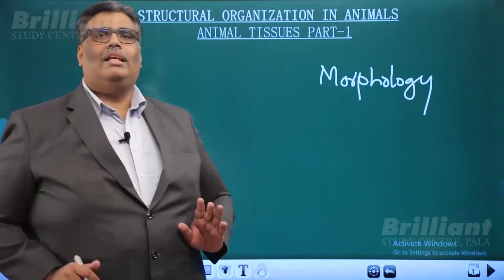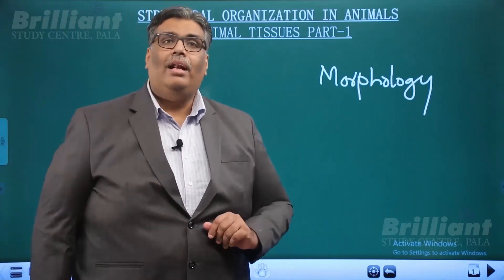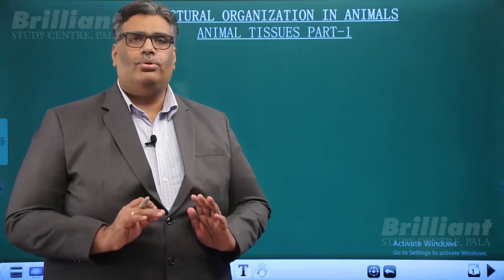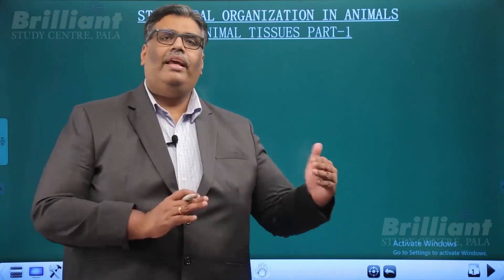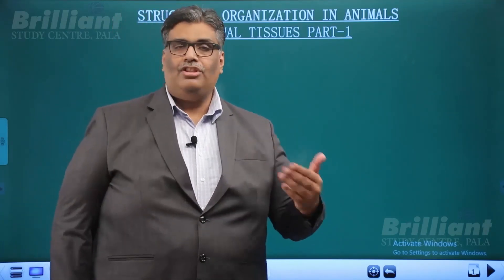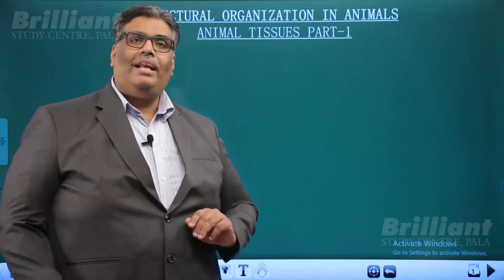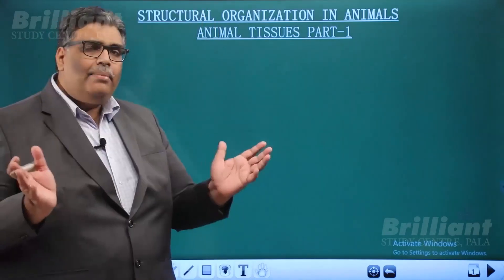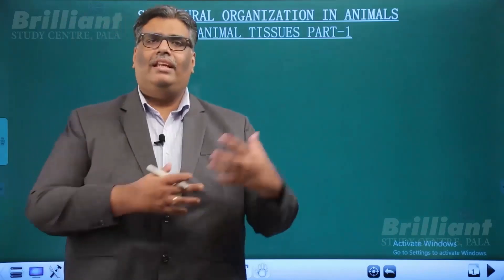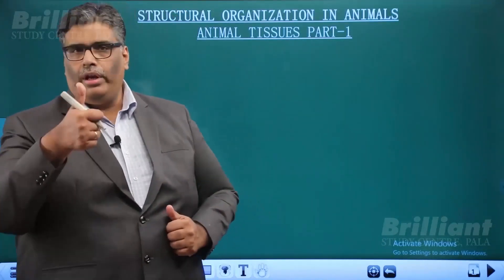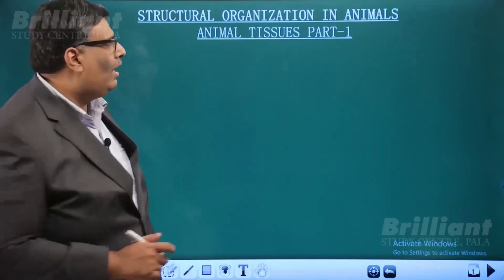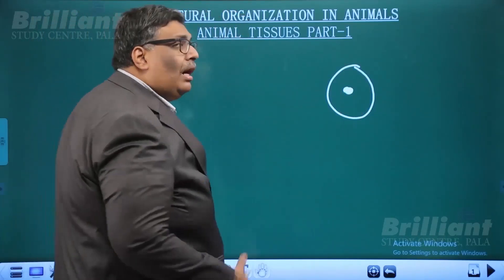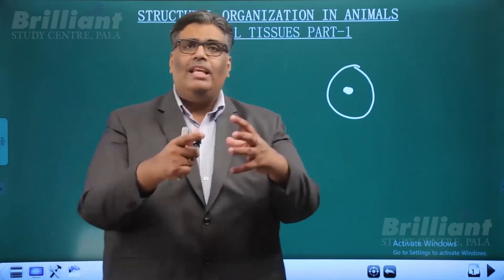We'll start today's class with animal tissues. When we learn about animals, the branch of science that deals with animals is called zoology. In the animal kingdom, living organisms can be unicellular — meaning one cell acts as an organism — and multicellular, meaning too many cells associate together and function as an organism.